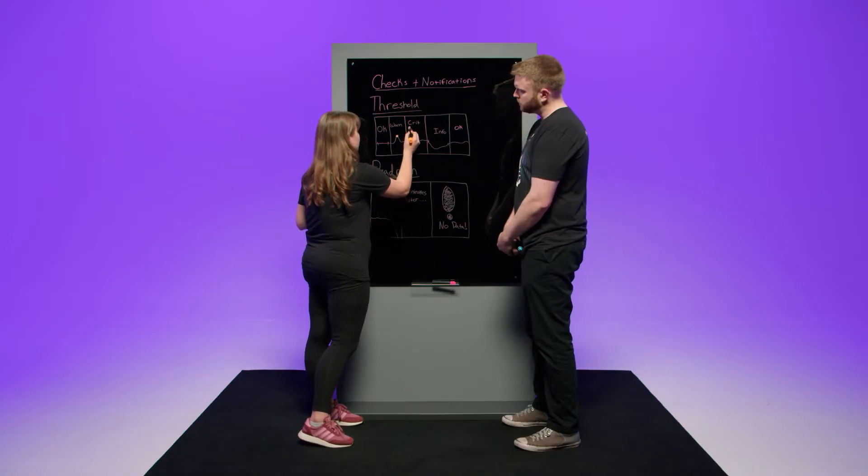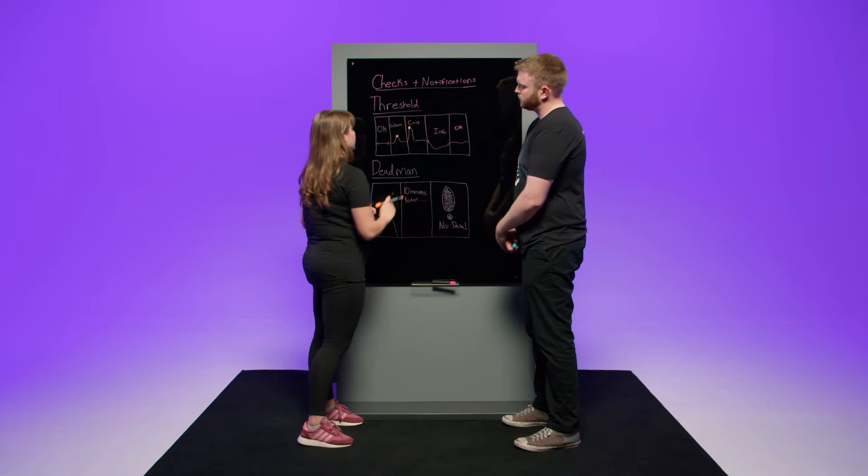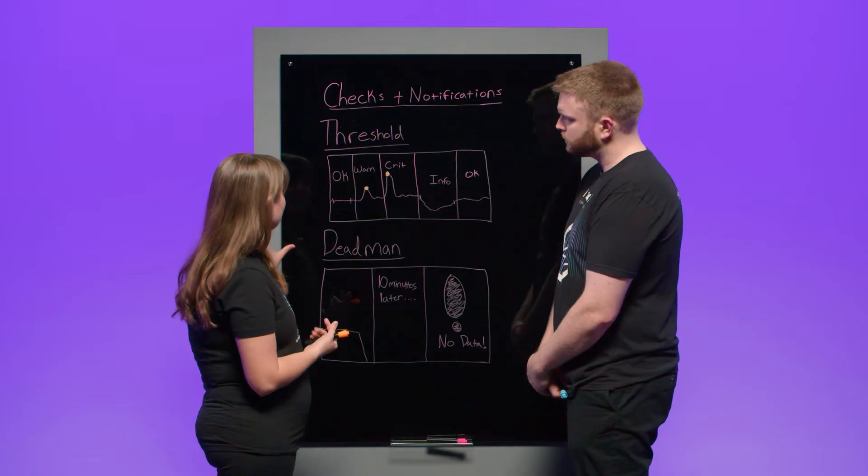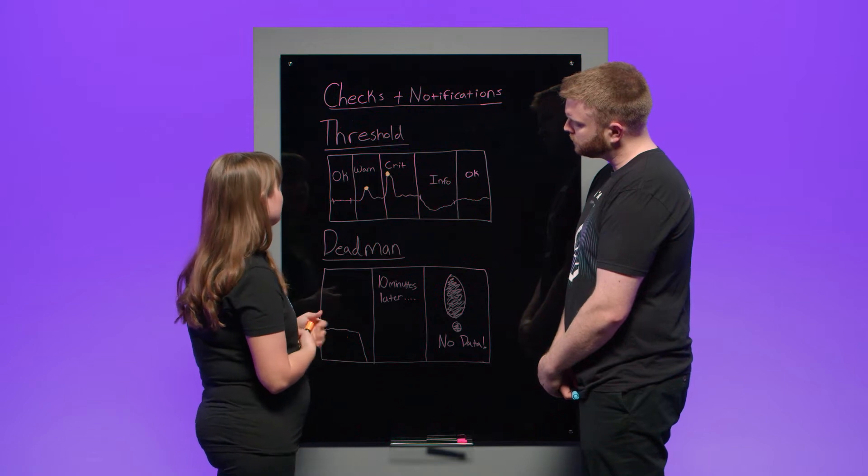You're not about to go run and put out a fire yet. The critical means something is 100% not right. We're very, very concerned. And we want to be notified immediately that something's wrong. And so those would be the main components of the threshold check.